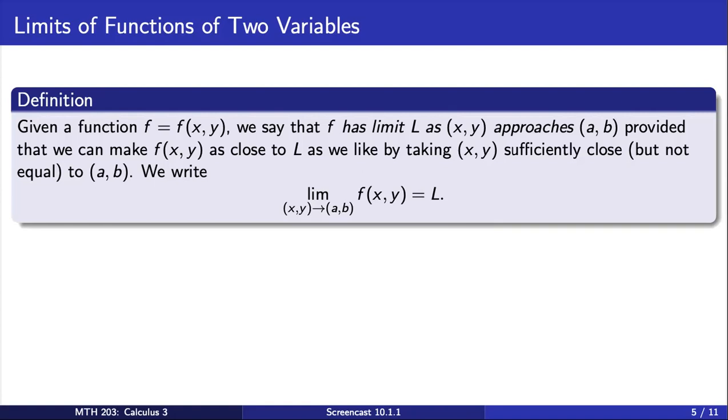With functions of two or more variables, determining the behavior of limits gets more complicated. One reason for this is because with single variable limits, there are only two directions that x can approach the value a, from the left and from the right.